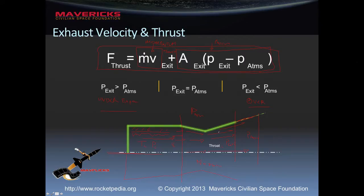We have a math flick on nozzle theory and a whole segment on that where you can learn how to optimize nozzle design. The important thing to understand here is that we're trying to maximize exhaust velocity and maximize the thrust or efficiency out of our rocket motor, and there are a lot of things that affect that.